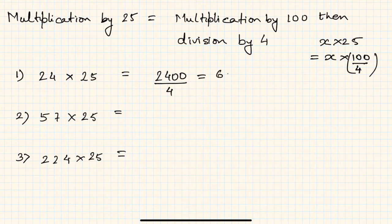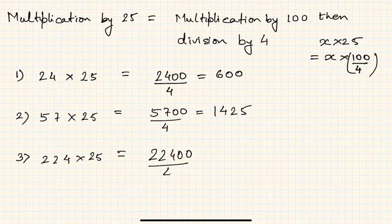Second is 57 into 25, so what do you need to do? 5700 by 4. If you calculate it, it is 1425. Now this has to be done mentally, because this is a training module so we'll have to go a little slow. Let us take the third example. This is 224 into 25, so it is nothing but 22400 by 4, which is 5600. So likewise, you can have any two digit, three digit, five digit number, and when you have to multiply by 25, simply multiply by 100 and divide it by 4.